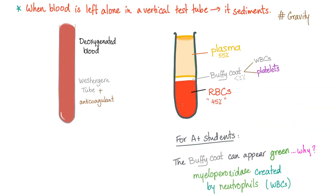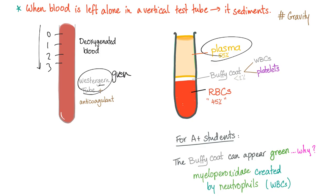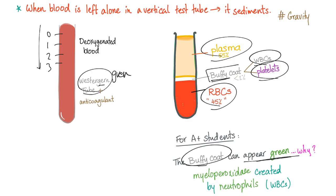When blood is left alone in a vertical test tube, it will sediment due to gravity. This Westergren tube is numbered from zero, one, two, three, and so on — it's written upside down. We have plasma on the top, red blood cells at the bottom, and a thin buffy coat in between that contains white blood cells and platelets. The buffy coat can appear green because of the myeloperoxidase created and secreted by the neutrophils.